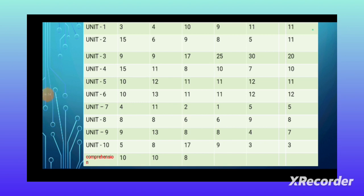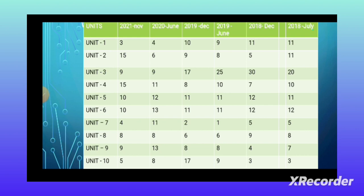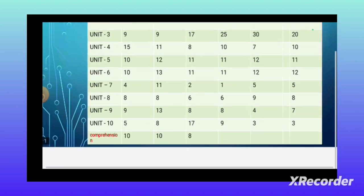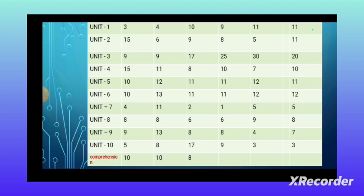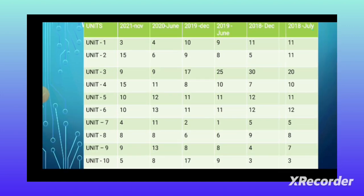Last but not least is reading comprehension. Nowadays, reading comprehension is also most important in environmental science. Because in 2018 July, 2018 December, and 2019 June, there was no reading comprehension — that time they focused mostly on the numerical part, with 10 to 15 questions from numericals. From December 2019 onwards, there was a gradual decrease in numerical questions. Nowadays, they are giving only one or two questions from the numerical part.